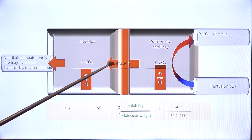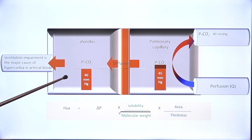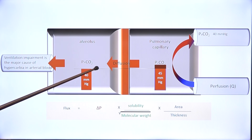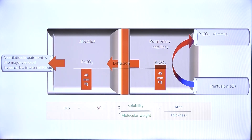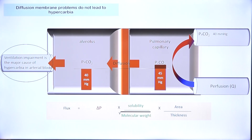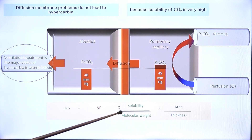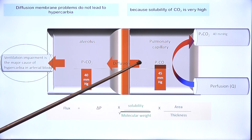Diffusion impairment does not affect either the amount of carbon dioxide that has to move out or arterial PCO2. The standard teaching is that diffusion membrane problems do not lead to hypercarbia because the solubility of carbon dioxide across the respiratory membrane is very high.